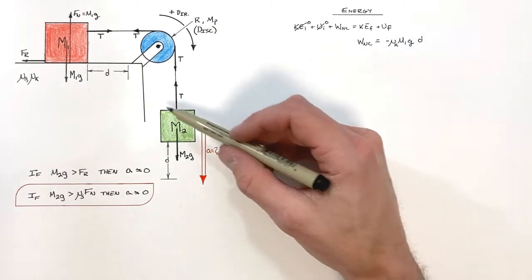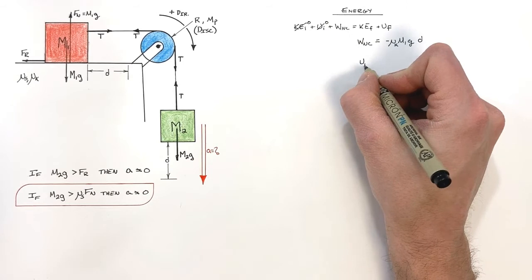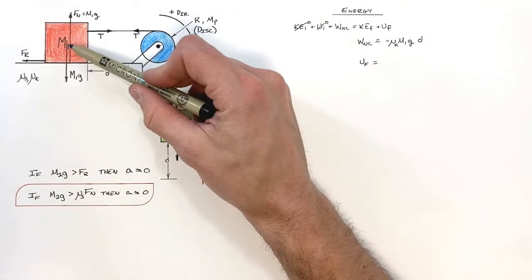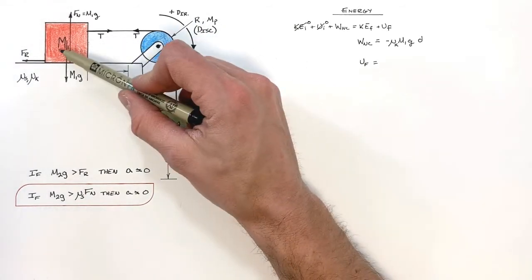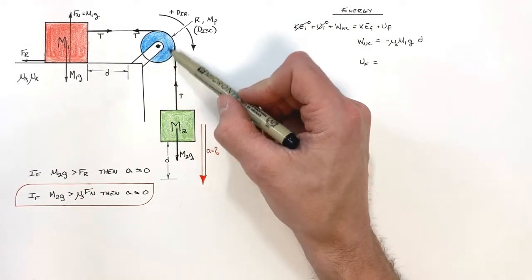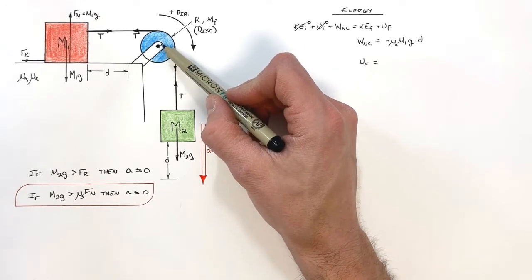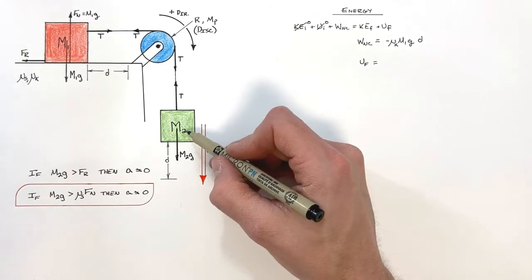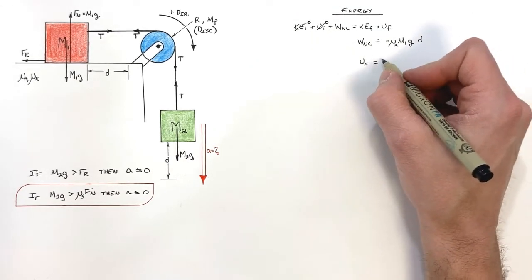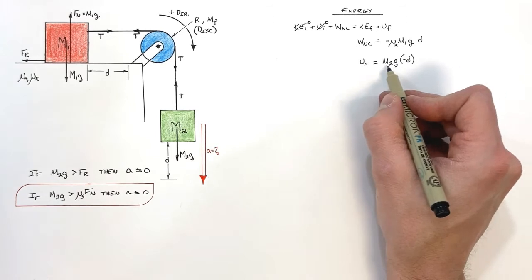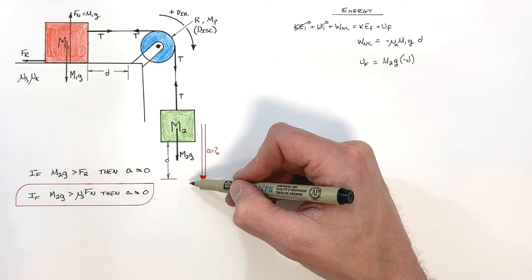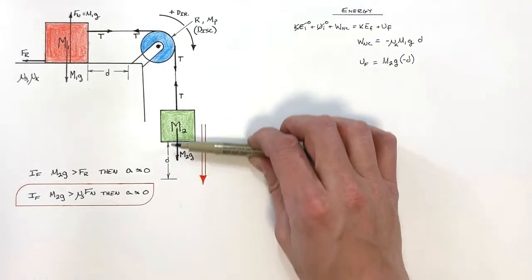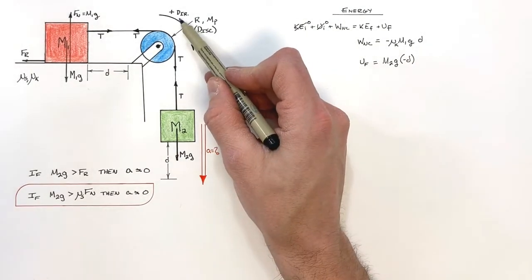Skipping ahead to final potential energy: it's really just the shift in potential for each of the three objects. The horizontal block moves horizontally, so it has no change in potential — it starts and ends at height zero. The pulley rotates but doesn't translate, so it also has no change in gravitational potential. The hanging block m₂ moves down a distance d, finishing at height negative d, giving a final potential of m₂g times negative d. Note that even though we called downward positive earlier, in energy calculations up is positive and down is negative.